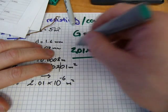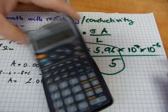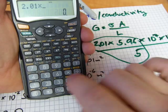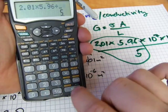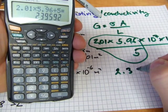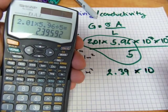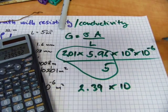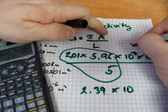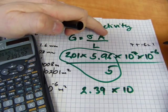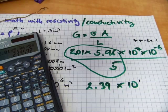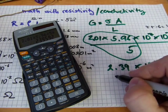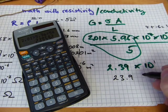So I want to multiply these two and divide by that one. 2.01 times 5.96 divided by 5 equals 2.39 times 10 to the power of, when we multiply we add, 7 plus minus 6 equals positive 1. 10 to the power of one is just 10, so this number is 23.9 Siemens.